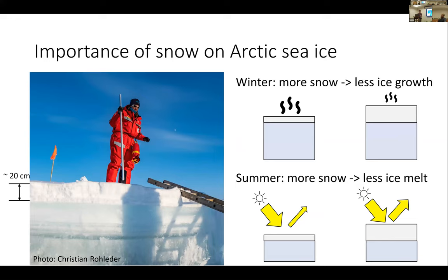More generally, the amount of snow we have on sea ice is really important. Snow is an excellent natural insulator. In the winter, the more snow we have, the less ice growth we see — snow is between about 7 and 12 times more thermally insulating than ice. And in the summer, we have the opposite effect: snow has very high albedo, so the more snow is on the ice, the more it will protect the ice from shortwave radiation, and the less ice melt we'll have.